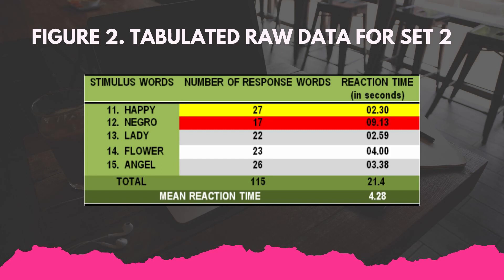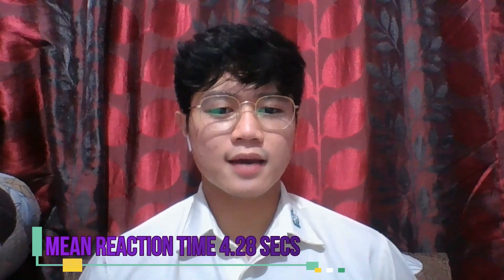For the next set, the participant was given 15 stimulus words. However, only the last 5 words were used to get the mean reaction time. The fastest reaction time was 2.30 seconds for the word happy, and 9.13 seconds — the slowest — for the word negro. 27 and 17 words were written respectively, with a mean time of 4.28 seconds.